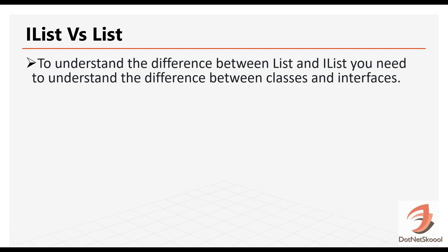To understand the difference between List and IList, you need to understand the difference between classes and interfaces. IList is an interface in C# and List is a class - a specialized concrete class implemented in C#. An interface is a half-implemented class, meaning it just has methods which are not implemented, and a class provides the complete implementation to the interface methods.